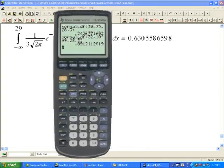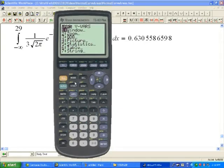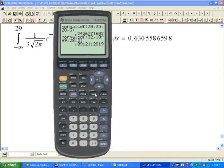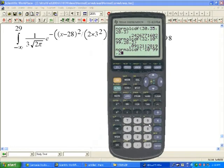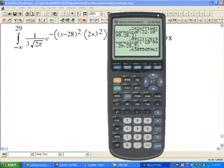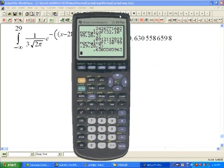For TI-83, we have to put negative infinity to the left, so we will just put negative 10 to the 99, a fairly large number. On the top we have 29, and then the two parameters of this normal distribution, and we have the same answer.